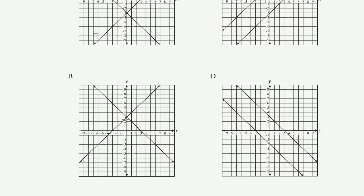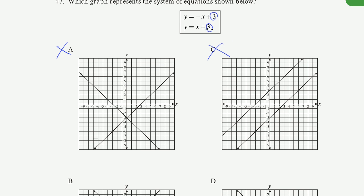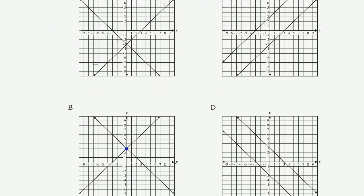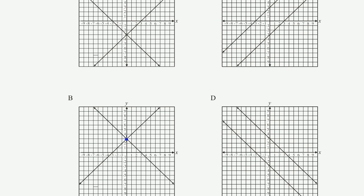Choice B: I have two lines. Both of them have a y-intercept of 3. This looks good so far. I have one line that has a positive slope of 1 — for every 1 I go over, I go up 1. And I have one that has a negative slope of 1 — when I move over 1, I go down 1. So this line is y = x + 3 (slope of 1, y-intercept 3), and this line is y = -x + 3 (slope -1, y-intercept 3).